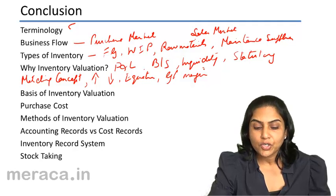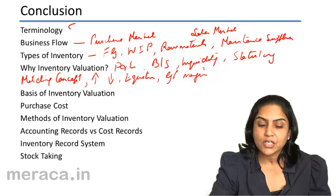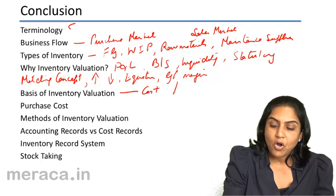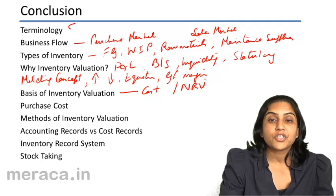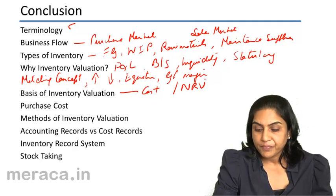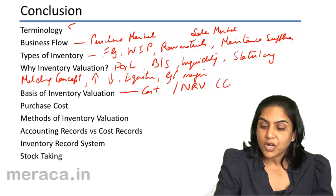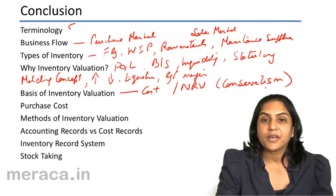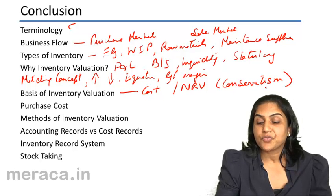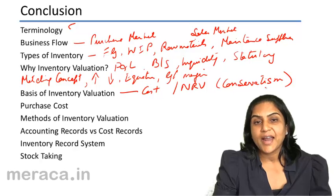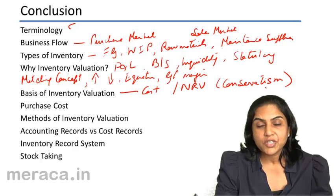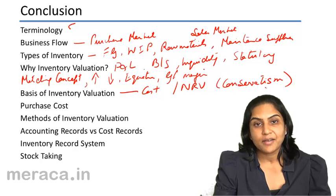We then moved on to the basis of inventory valuation, which was basically cost or NRV, whichever is lower. We then moved on to the basis of conservatism, wherein we provide for any anticipated losses, but we recognize profits only when actually realized.